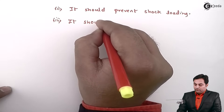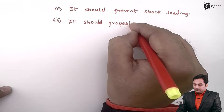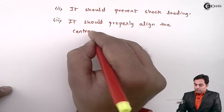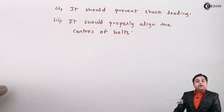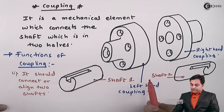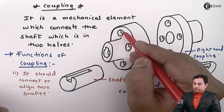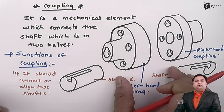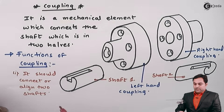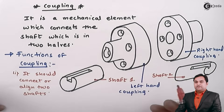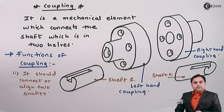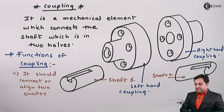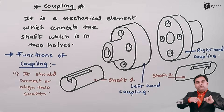The next function is that it should properly align the centers of the bolt holes. When connecting the left hand and right hand coupling, the holes provided for the bolts must be properly aligned so the coupling transfers power smoothly. If the centers are not matching, there are chances of the bolts shearing or breaking because one coupling rotates before the other.